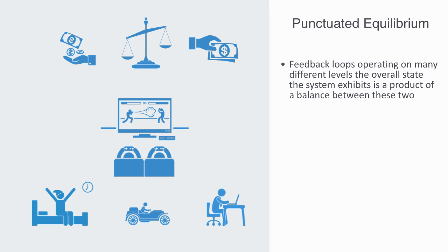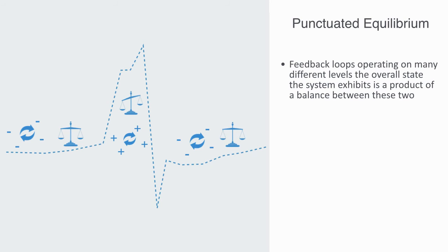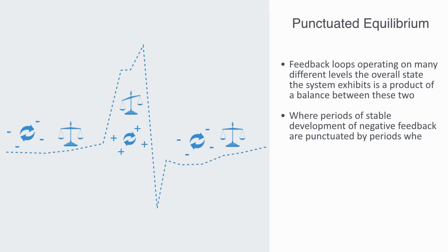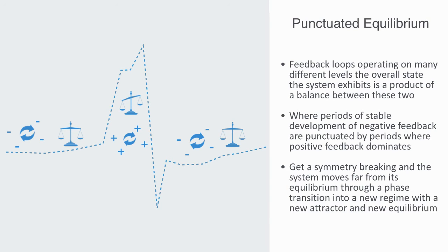This model of a system's development is called punctuated equilibrium — where periods of stable development and equilibrium, where the system is dominated by negative feedback, are punctuated by periods where positive feedback becomes dominant. We get a symmetry breaking and the system moves far from its equilibrium into a phase transition as it goes into a new regime — with a new attractor, a new equilibrium, and once again a new set of negative feedback loops taking over. Giving us this punctuated equilibrium that is a product of an interplay between negative and positive feedback development.